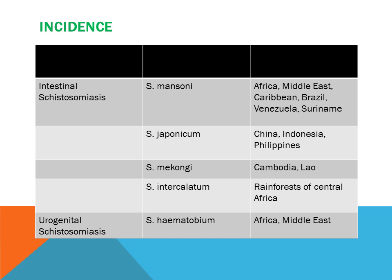Schistosoma mekongi, found in Cambodia and Laos. Schistosoma intercalatum, found in the rainforests of Central Africa. And Schistosoma haematobium, found in Africa and the Middle East, and is of the urinary tract infection type.